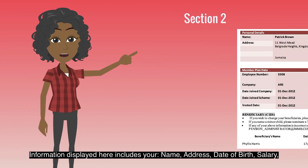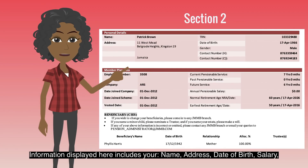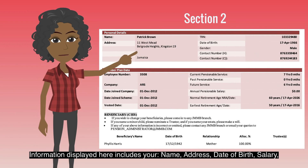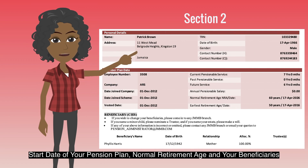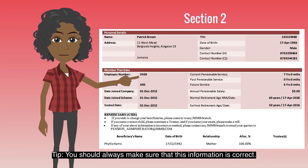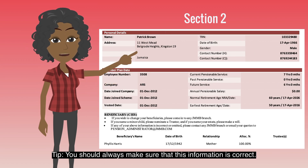Section 2: information displayed here includes your name, address, date of birth, salary, start date of your pension plan, normal retirement age, and your beneficiaries. Tip: you should always make sure that this information is correct.